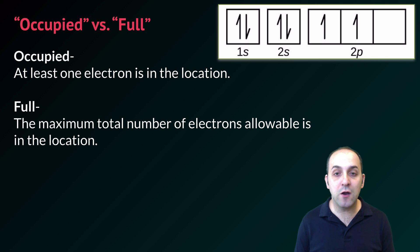In the case of carbon up here, we know that carbon has one totally full principal energy level, the first one, and it's got two occupied principal energy levels. Carbon has two totally full sub-levels and three occupied sub-levels, and carbon has two totally full orbitals and four occupied orbitals.